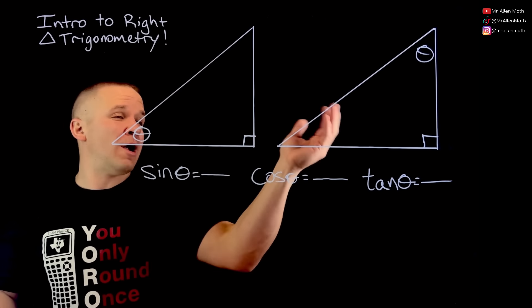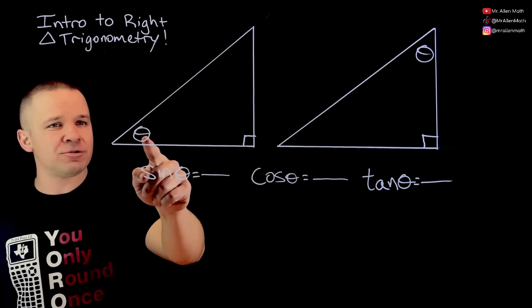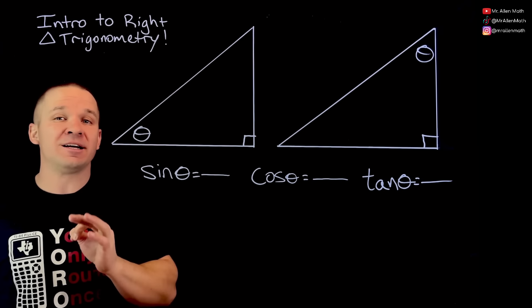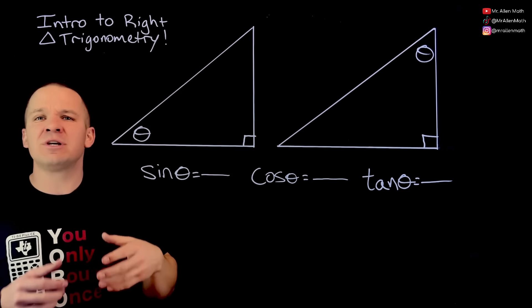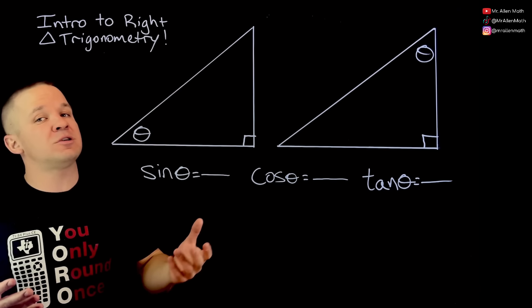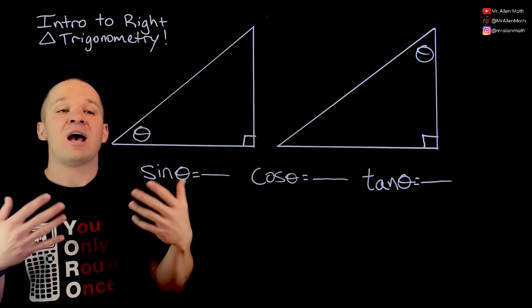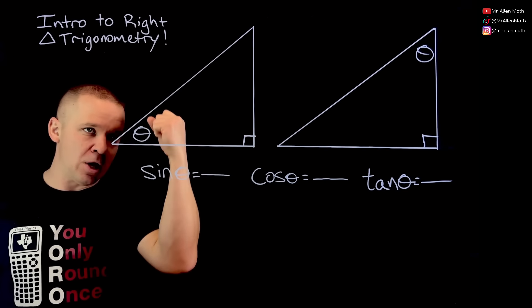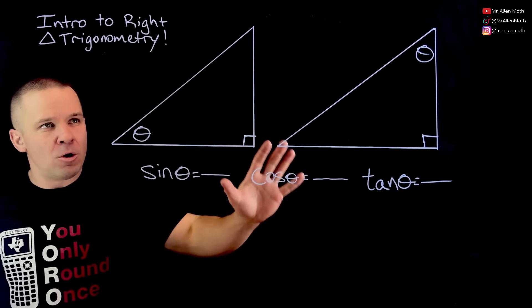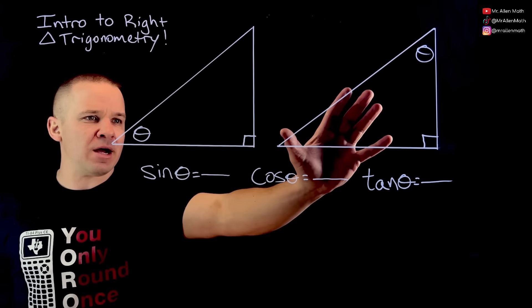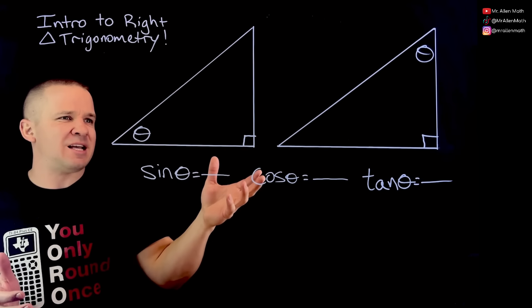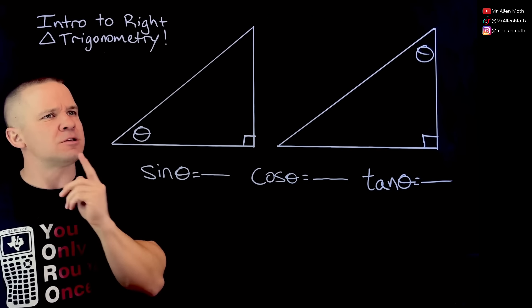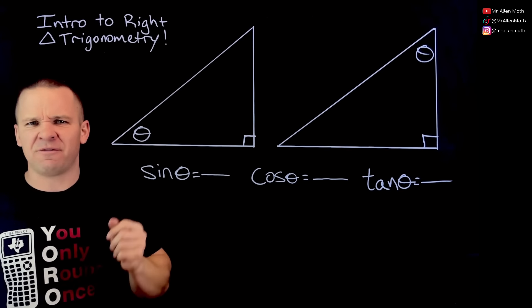We've got ourselves two right triangles here and this interesting circle — that's called theta. It's a Greek letter, and we use it as a variable in mathematics, often associated with angles. So we have these two right triangles and they look pretty much like the same thing, except theta is in a different spot. So what kind of significance does that have?